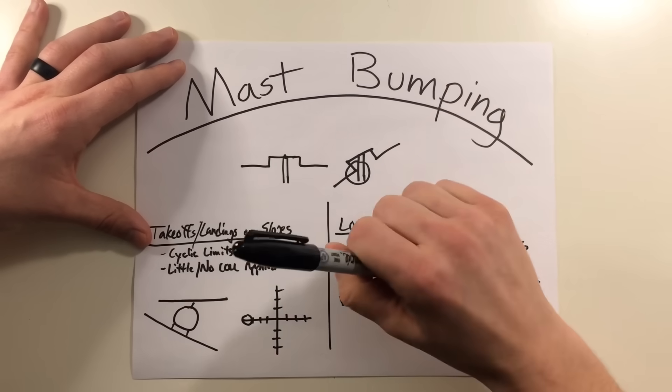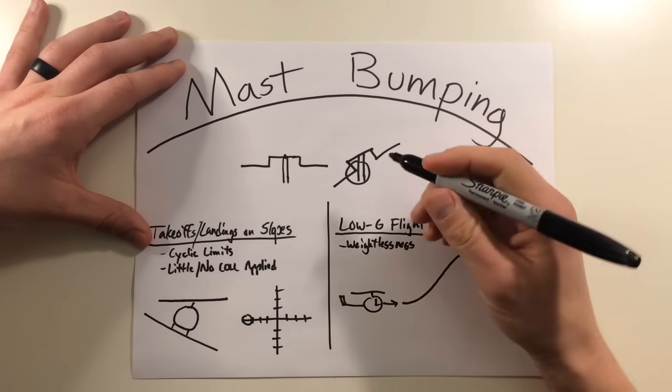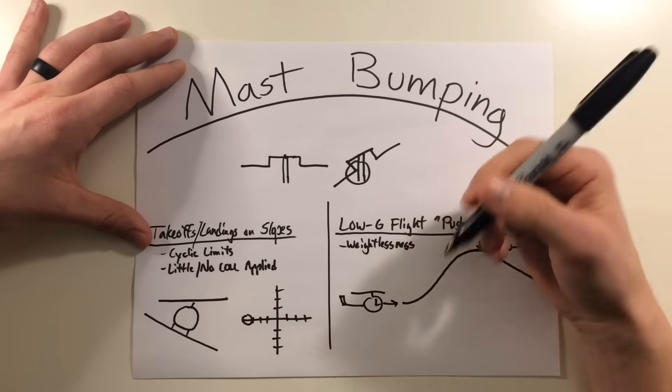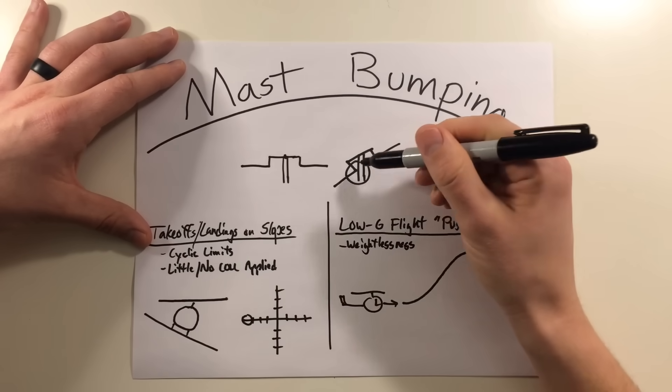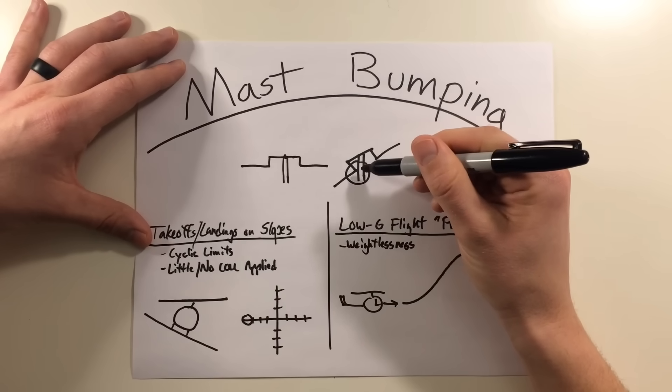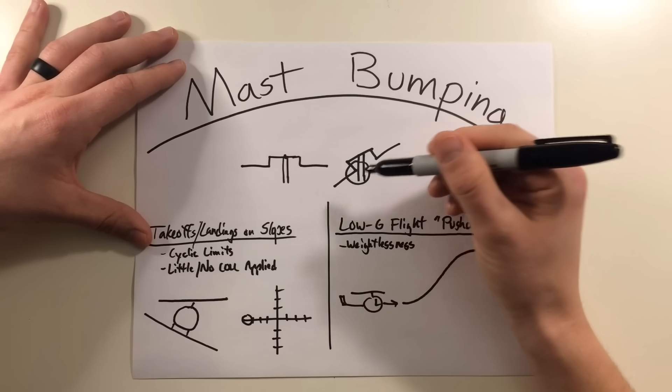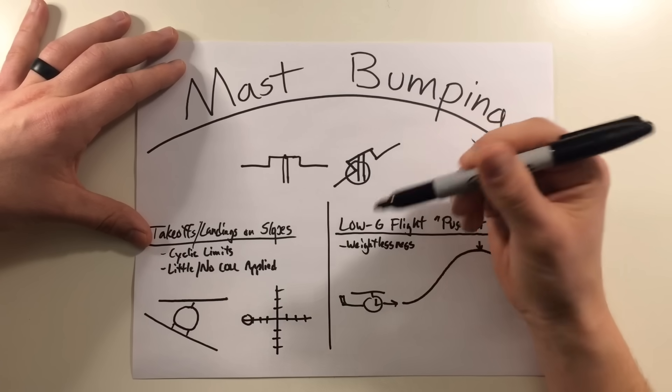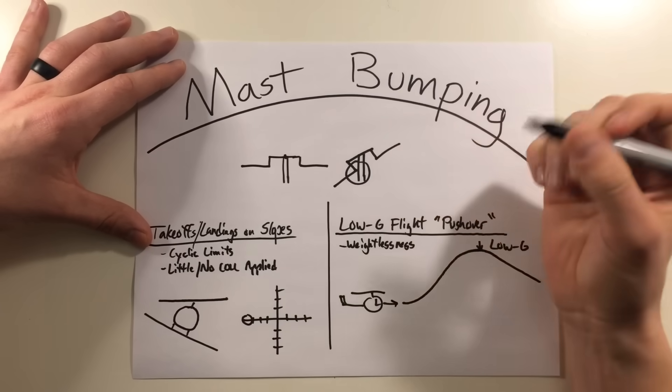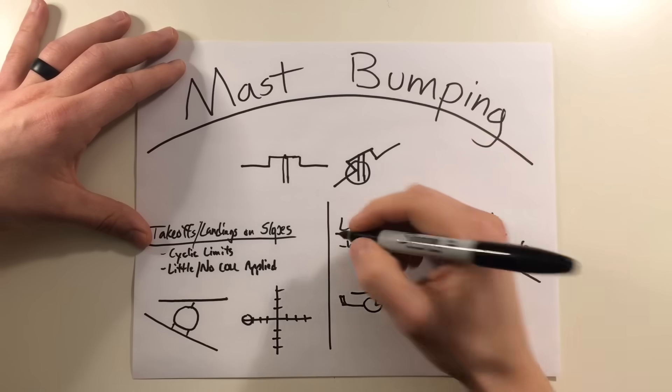The pilot applies even more left cyclic and the rotor reaches its flapping limit. Now the rotor hub and the mast, depending on the severity and how much displacement you have in the cyclic, potentially get in a condition where the hub and the mast make contact. And if the force is sufficient enough, you can either bend or break the mast, resulting in the rotor separating and the fuselage falling to the ground.